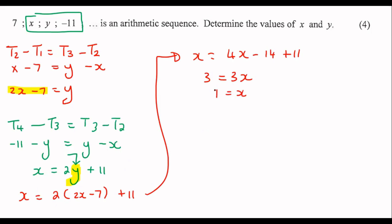We can then put that 1 over here. And so that will allow us to find y. So we can see that y will be equal to 2 times 1 minus 7. And so y will be equal to negative 5.